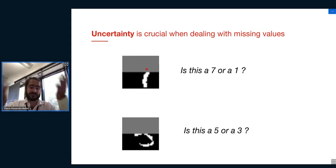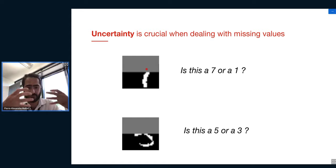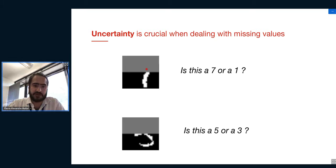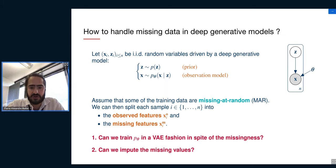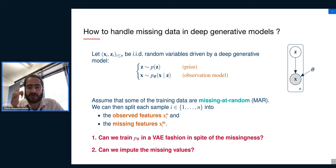The nice thing about deep generative models is that they are statistical models that posit distributions over data points, so they can naturally handle this kind of uncertainty. That was our motivation for using deep generative models as tools to deal with missing values. I'll put maybe three slides with some math but explain quickly how it works.